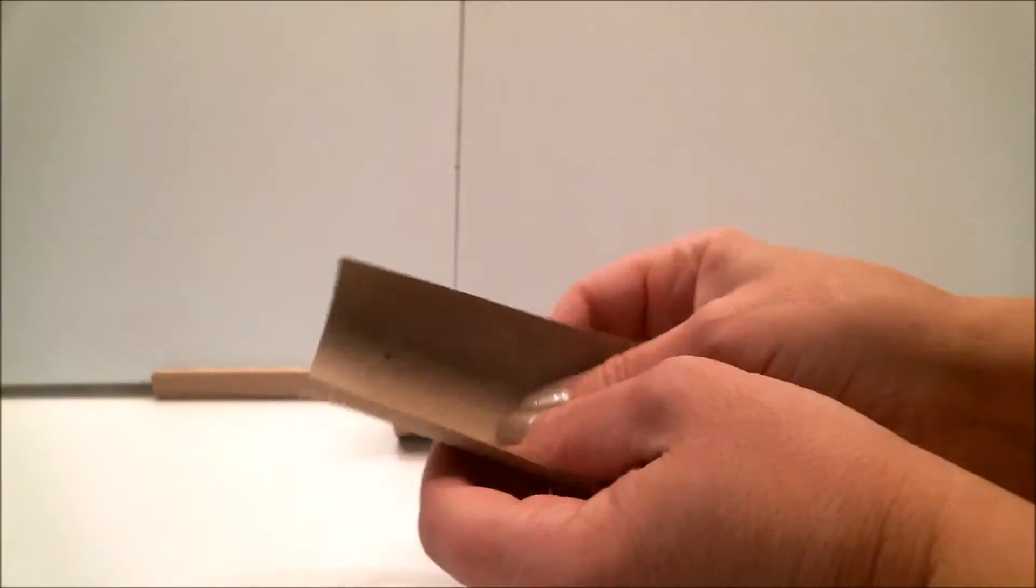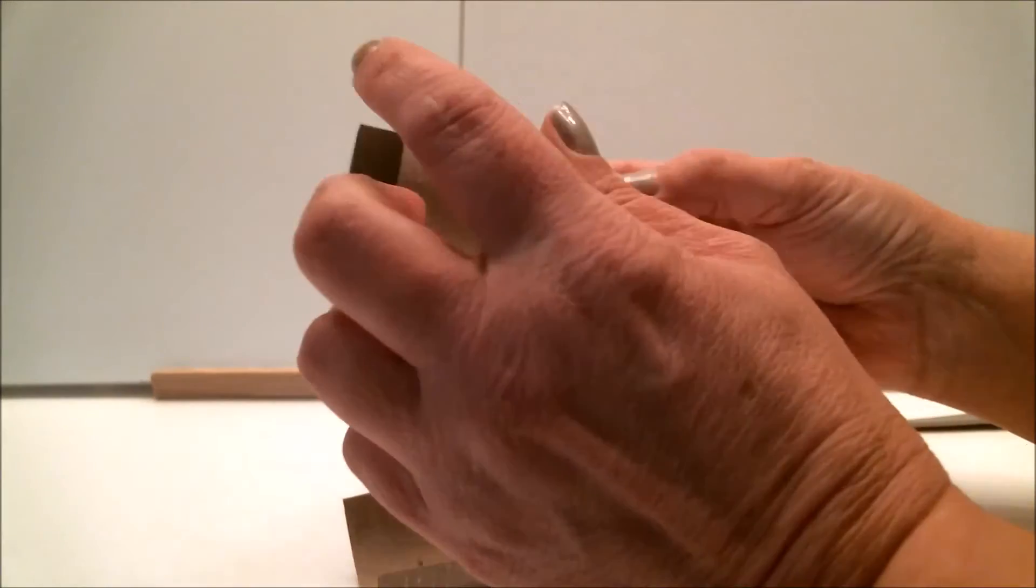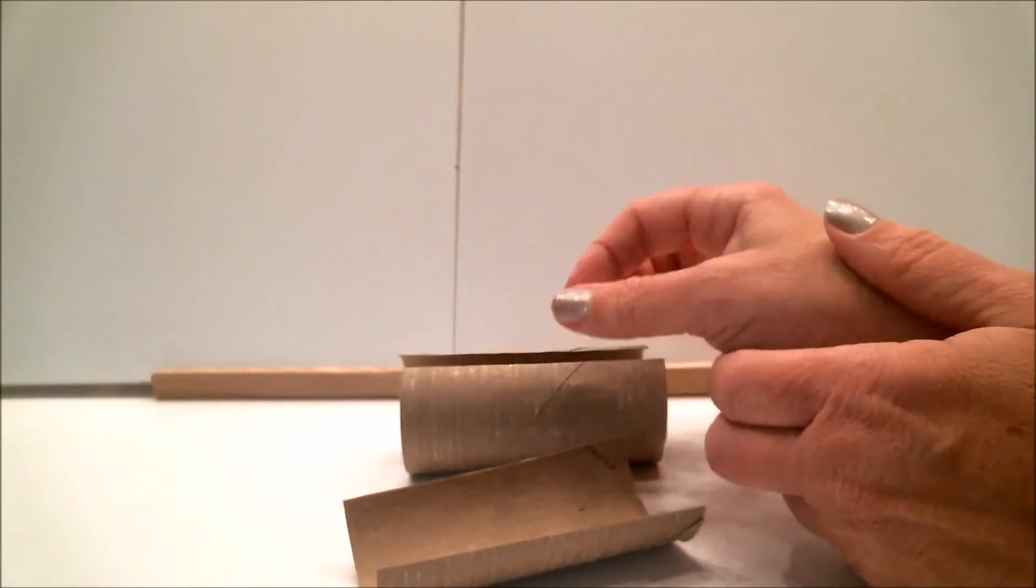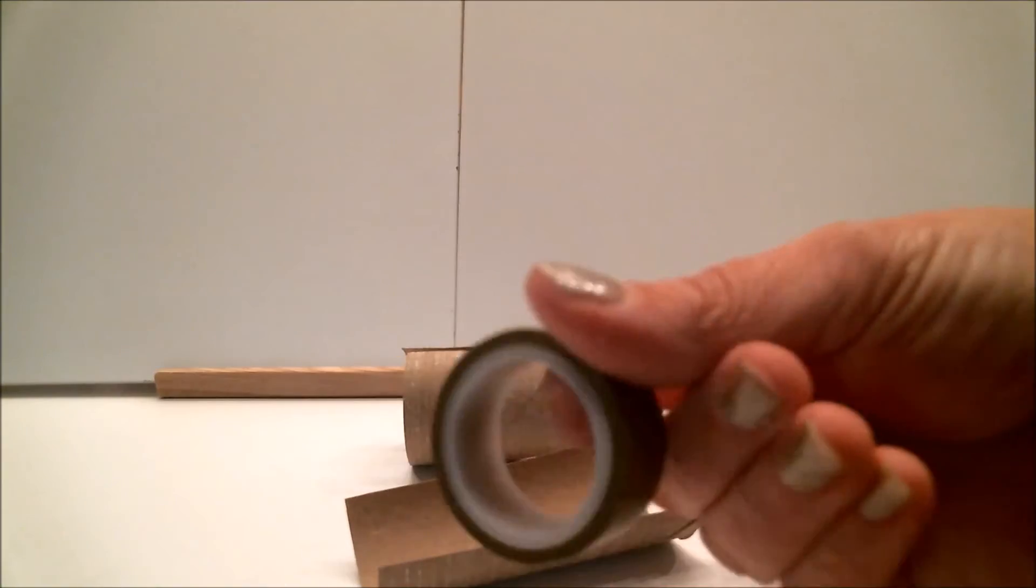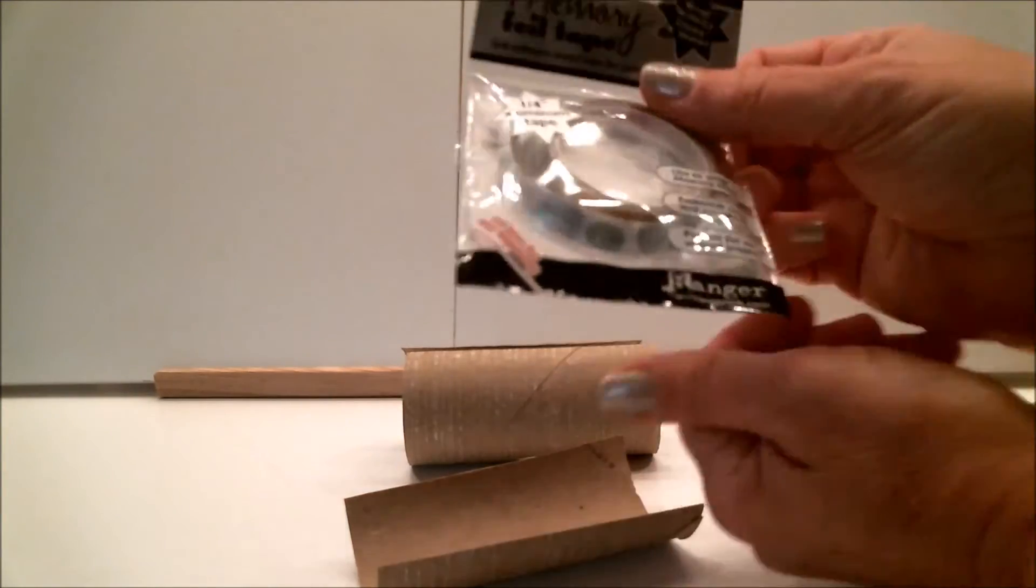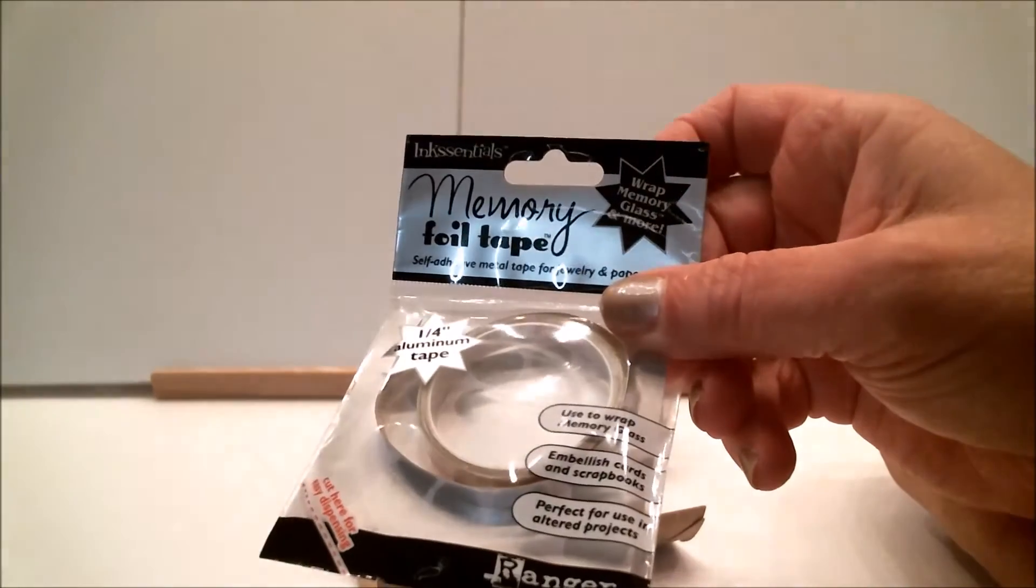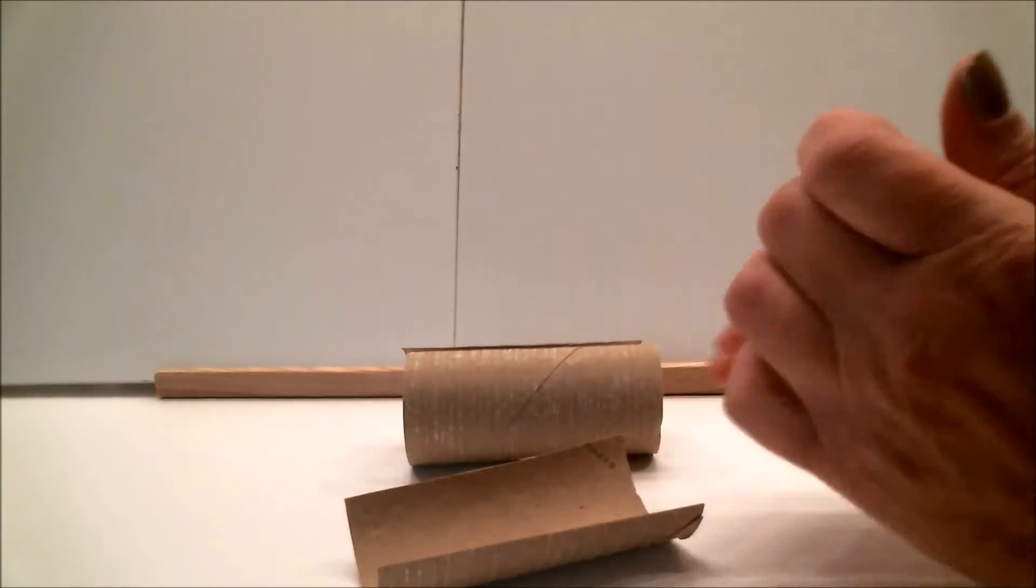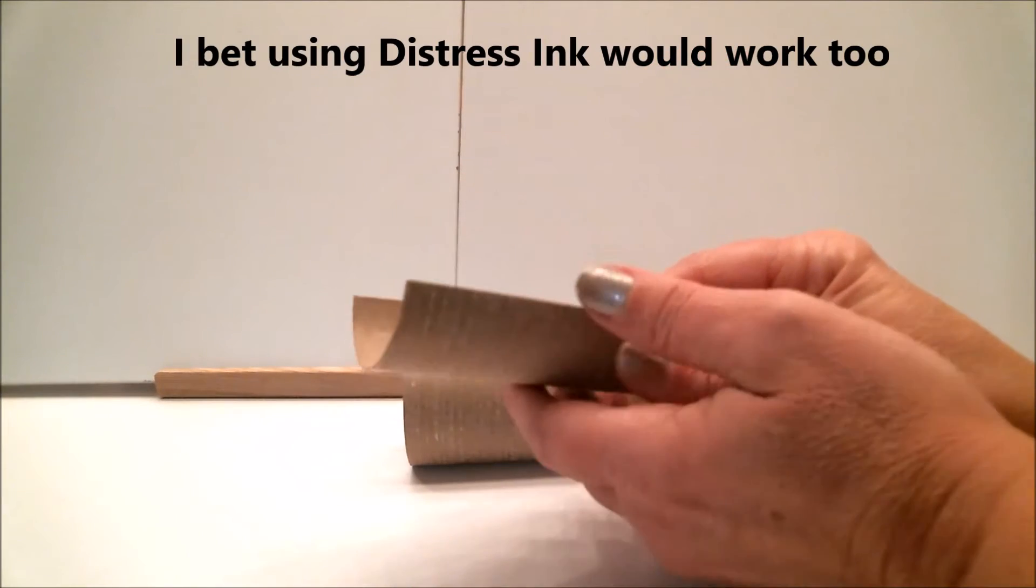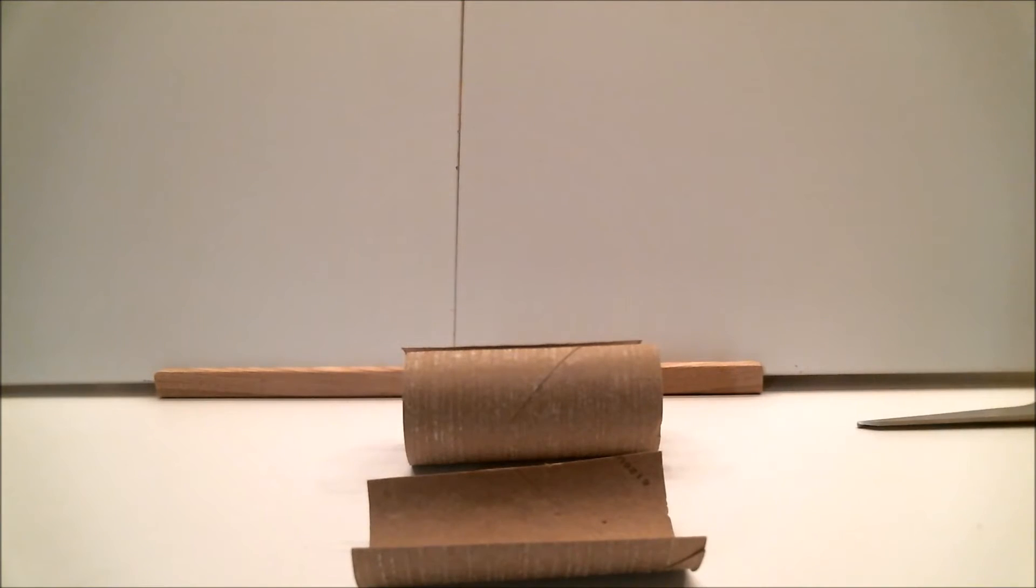The next thing you're going to want to do is cover the outside edges of these rolls. You can paint those edges. You can cover them with washi tape, any color to match what you're doing. You can cover it with this really pretty foil tape. And the reason is because you really don't want this cardboard exposed. So I'm going to do that really quick and then we'll get on to the next part.